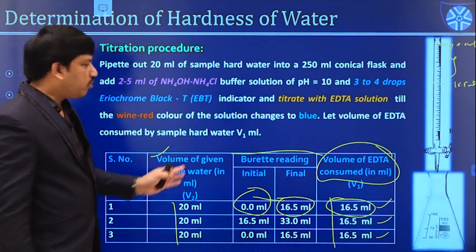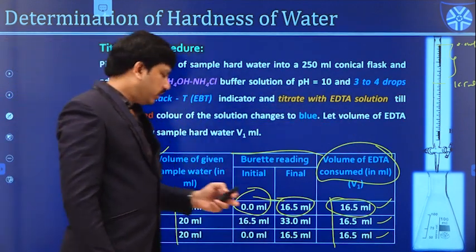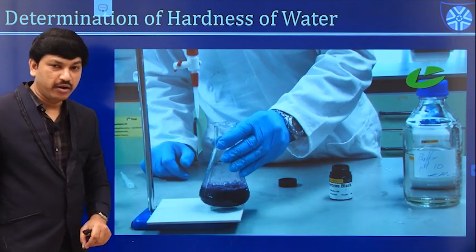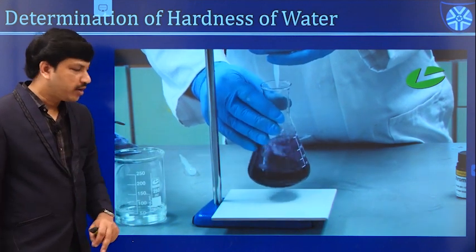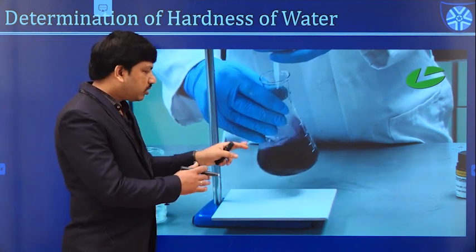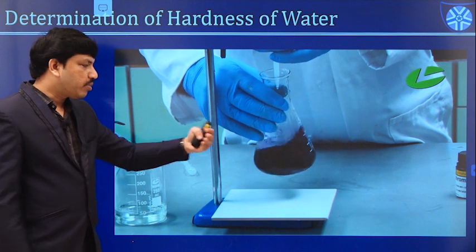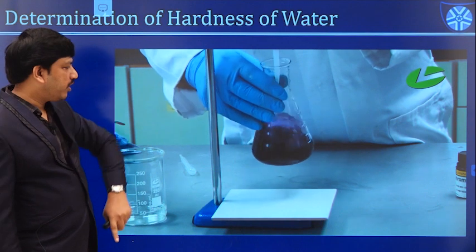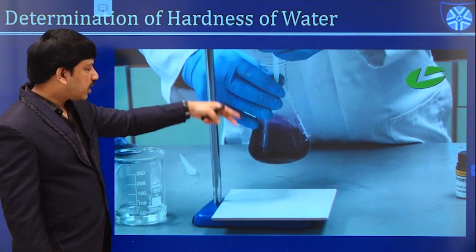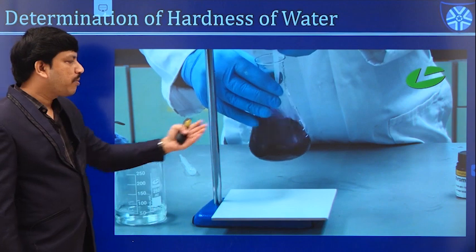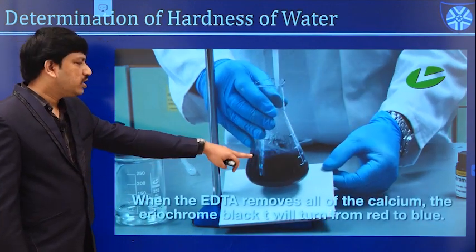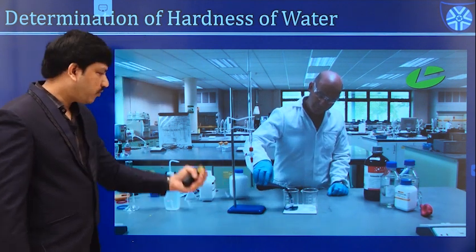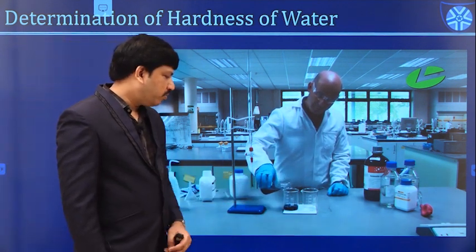A demonstration video shows the color changes in this titration. The entire solution turns wine red after the indicator is added — indicating calcium and magnesium salts are present. Upon titrating with disodium salt of EDTA, the solution suddenly changes from wine red to blue color, marking the end point of the titration.